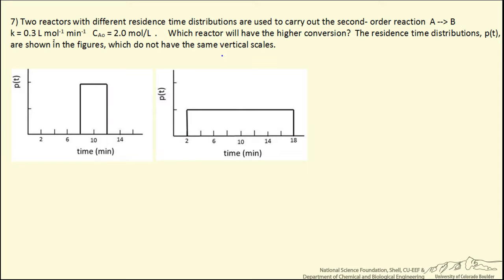In this problem we want to compare two reactors that have different residence time distributions. These are idealized residence time distributions paired to make calculations easy, but we want to compare for a second-order reaction. Given a feed concentration of 2 moles per liter, which reactor is going to have the higher conversion?